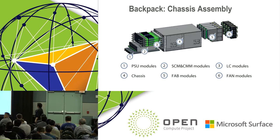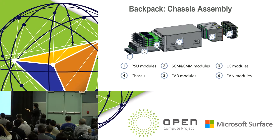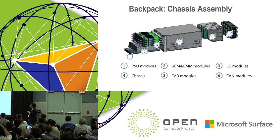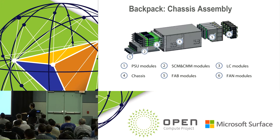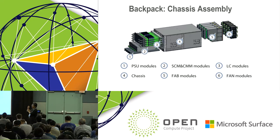Here's the chassis assembly view. Number four is the chassis itself at the front. Number three is the four line cards, plugging into the chassis horizontally. Number two is the CMM and SCM — small CPU modules — plugging in vertically. Number one is the four PSUs plugging into the chassis from the front. Number five is the fabric card, plugging into the chassis vertically from the rear side. Number six is the fan tray, which actually plugs into the fabric card.